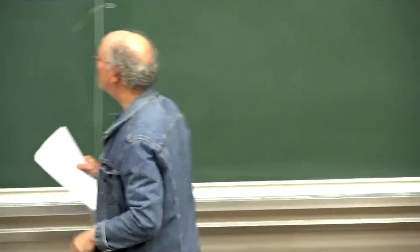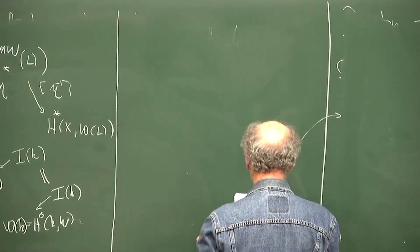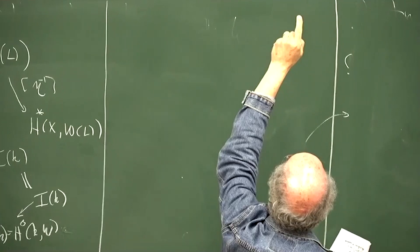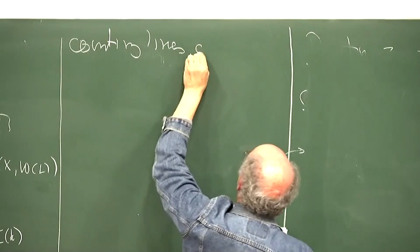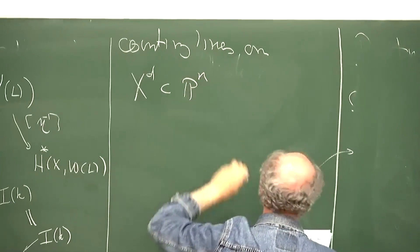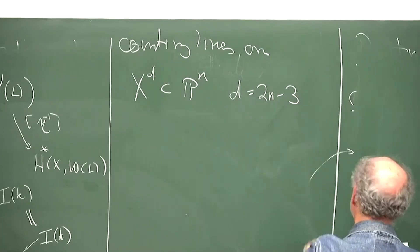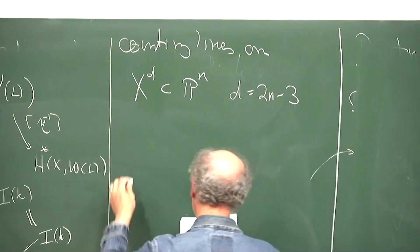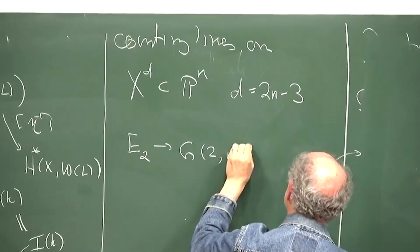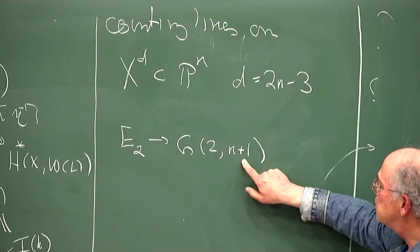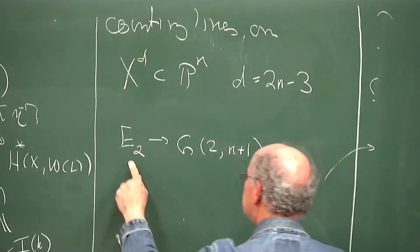Let me give an elementary example to illustrate this — especially to point out where the orientations come in. The elementary example is counting lines on a hypersurface X of degree d inside P^n. If you take d equal to 2n minus 3, you'd expect that a general smooth hypersurface of that degree would have finitely many lines. Lines in P^n are 2-planes inside affine (n+1)-space, so the Grassmannian of 2-planes in (n+1)-space parametrizes the lines in P^n.